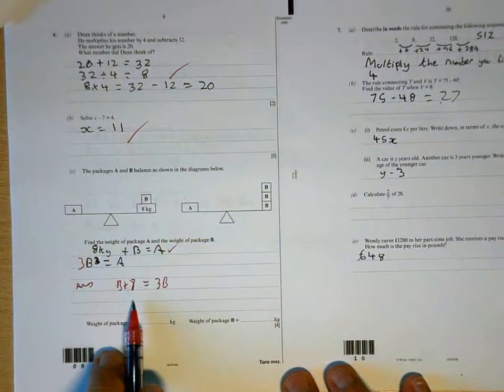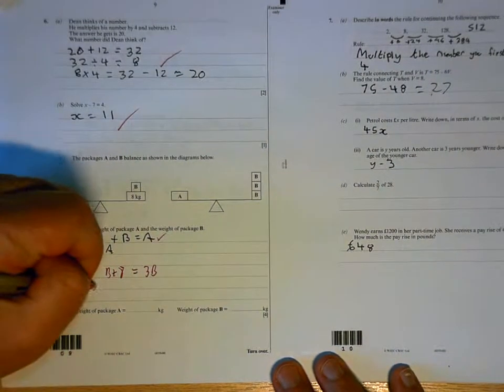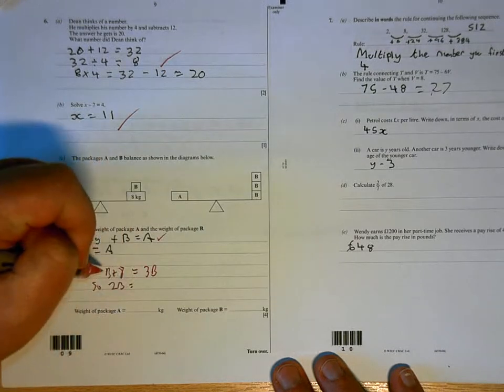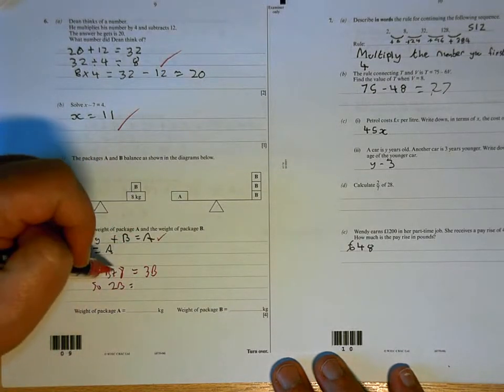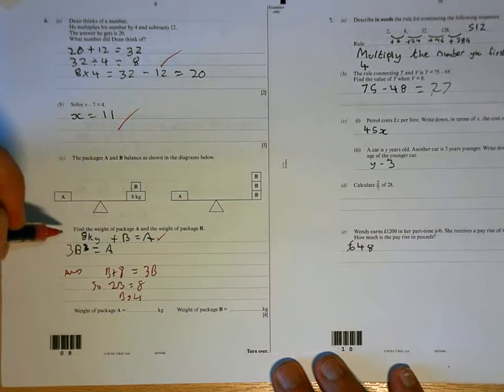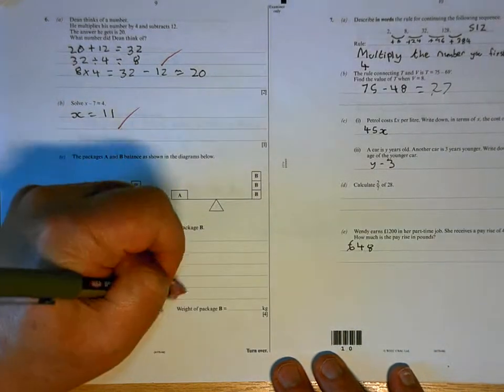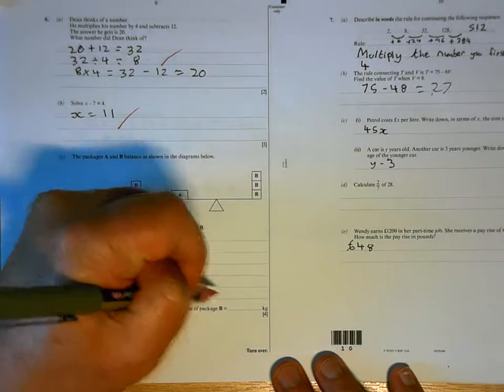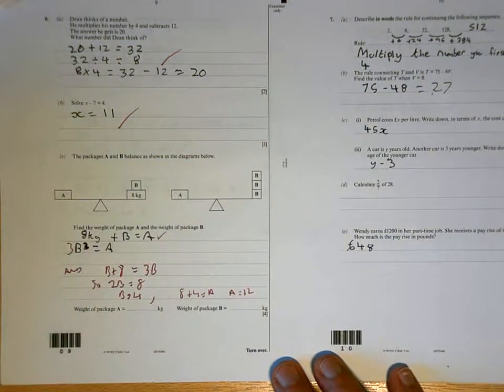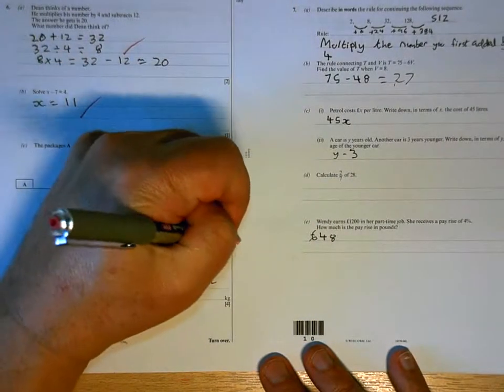And it's from there that you work out your answer. So two b would equal eight, b equals four. And once you know that, you can then work out what a is. So eight plus four equals a, a equals twelve. You haven't quite done enough there to merit any marks.